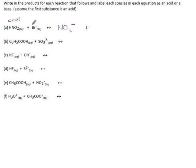Meanwhile, on the bromine side — if this gains a hydrogen, you add one to the formula. And the charge, which used to be negative 1, increases to 0, meaning there's no need to write anything.